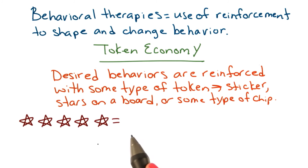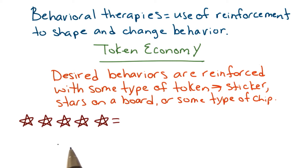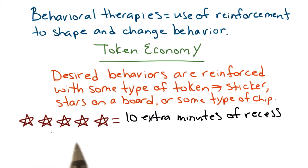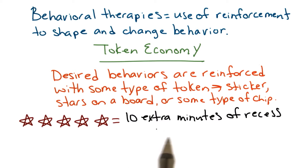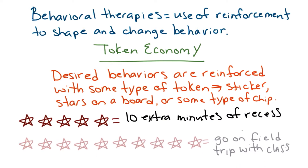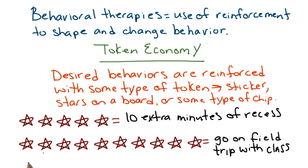For example, a child with ADHD may be put on a token economy where he gets a token for every homework assignment that he completes on time. After he accumulates five stars, he gets 10 extra minutes of recess. Moreover, if he earns 10 stars, he gets to go on the field trip with the class.